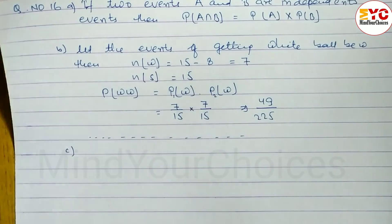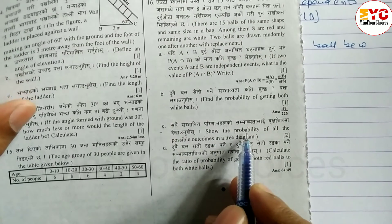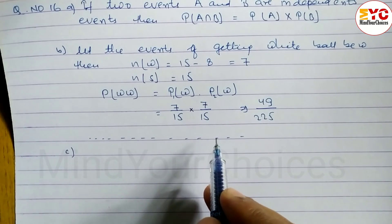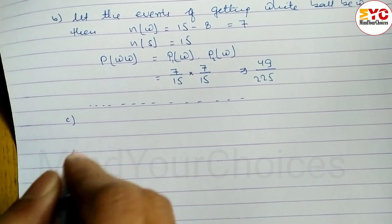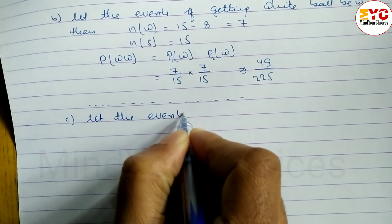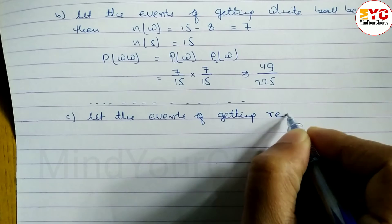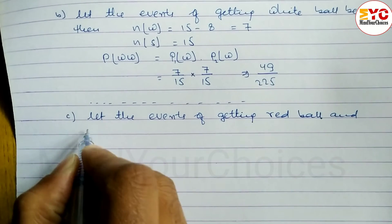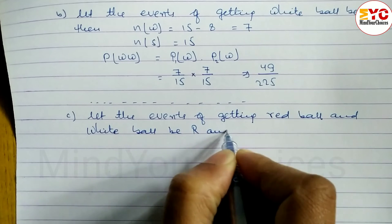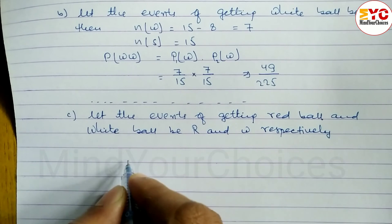Number C. Find the probabilities of all the possible outcomes in a tree diagram. Now I will show you a tree diagram. This is the with-replacement question. Let the events of getting a red ball and white ball be shown in a tree diagram.